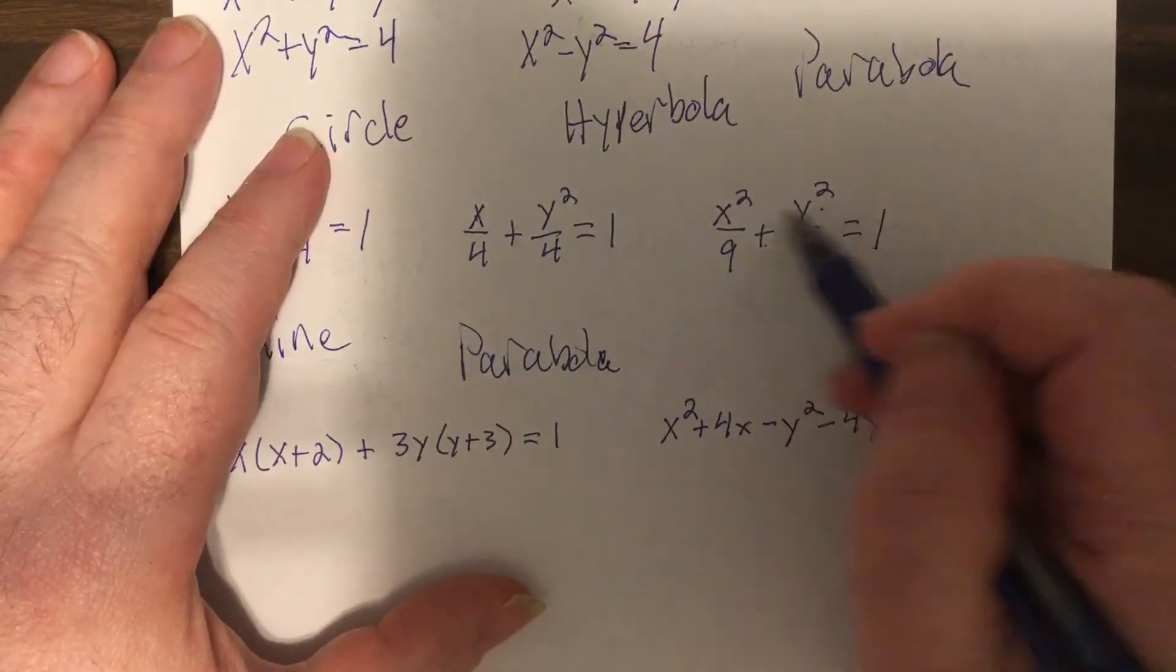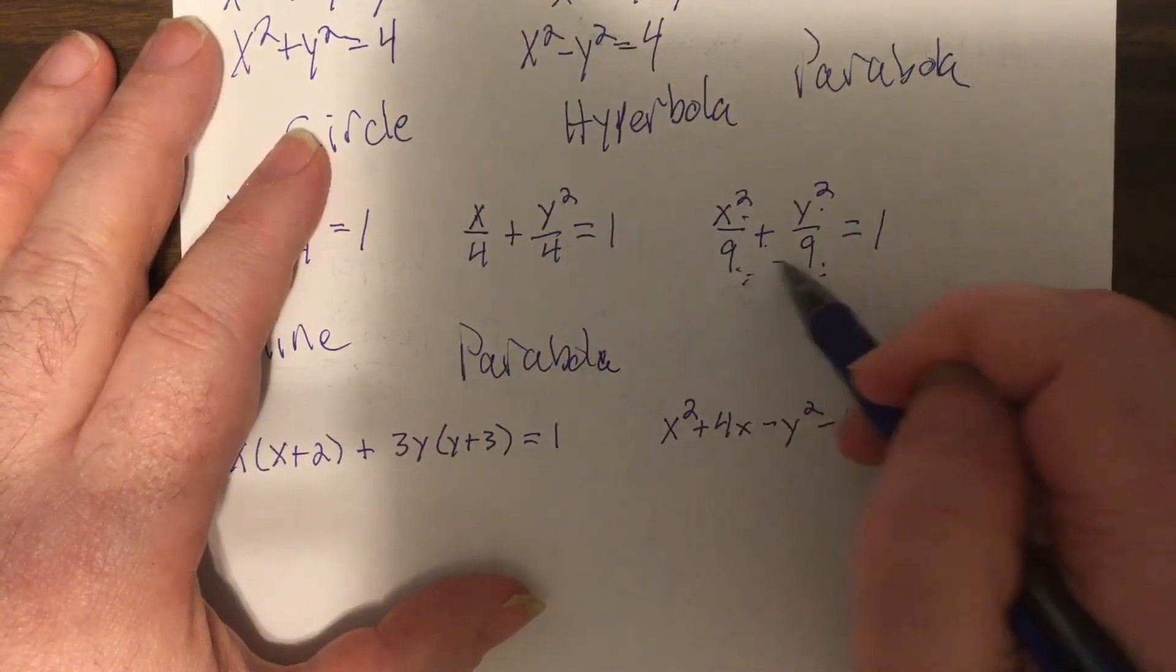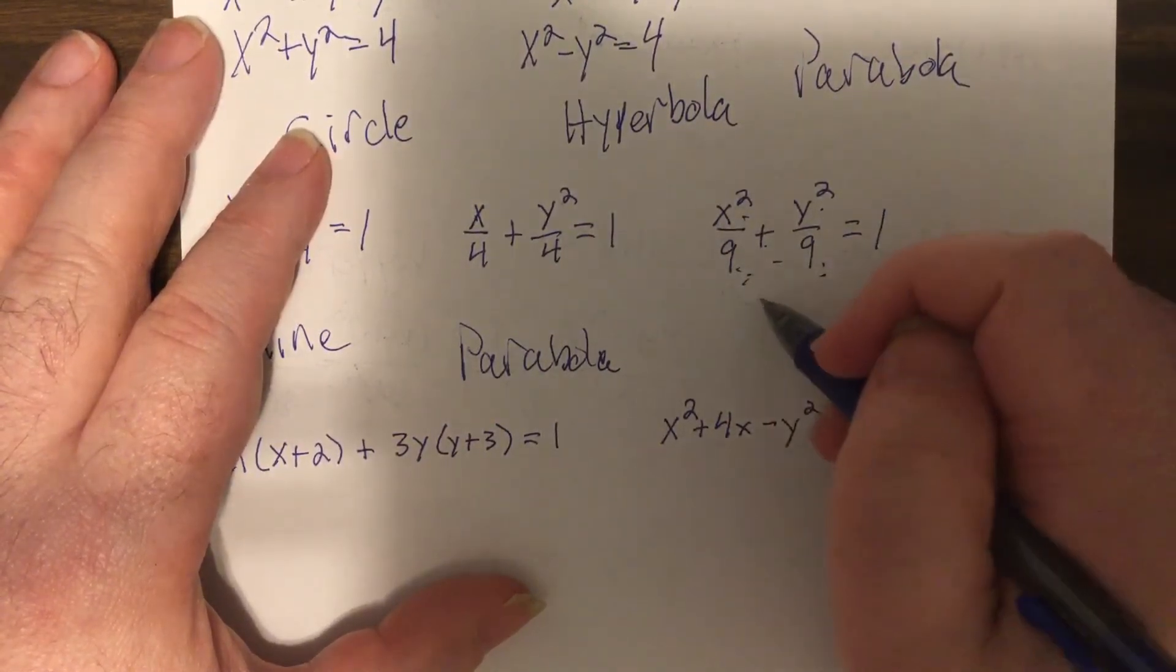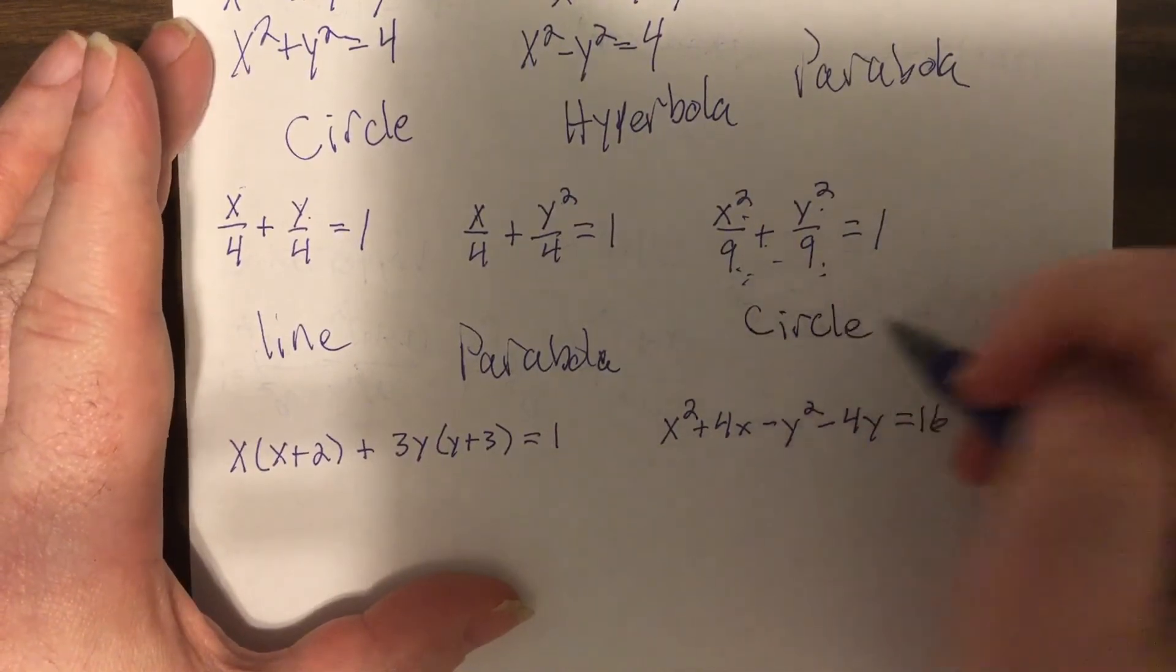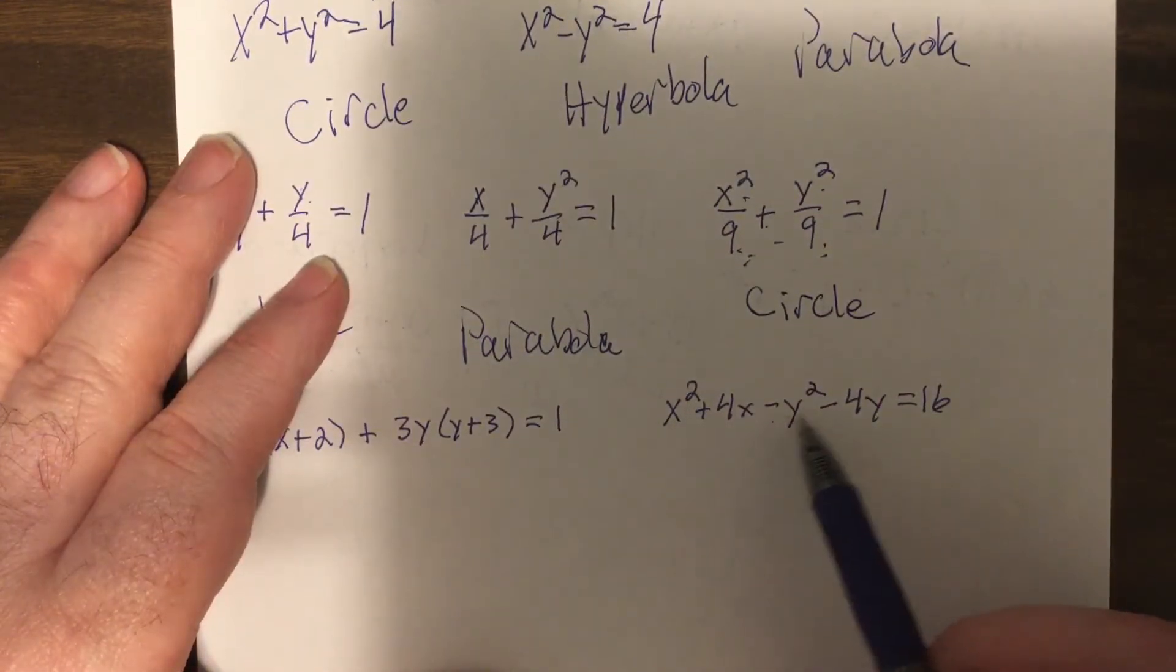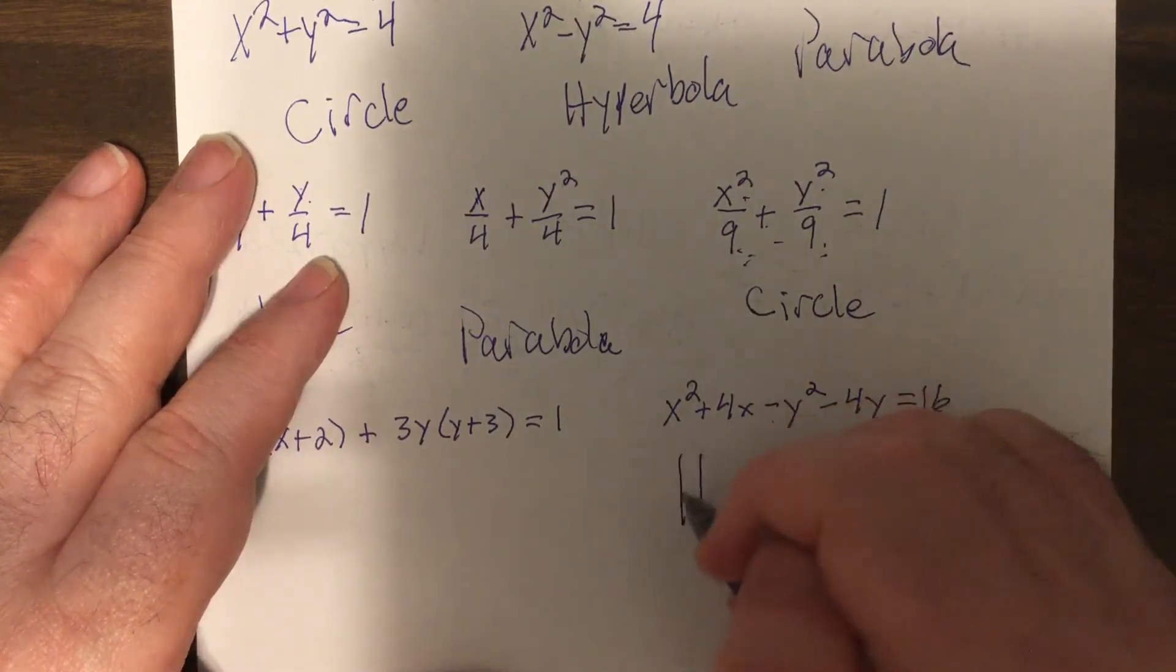This one, we have sum of squares, same coefficients or denominators, however you want to say it. It's a circle. This one, we got a square minus square. Oh my goodness.